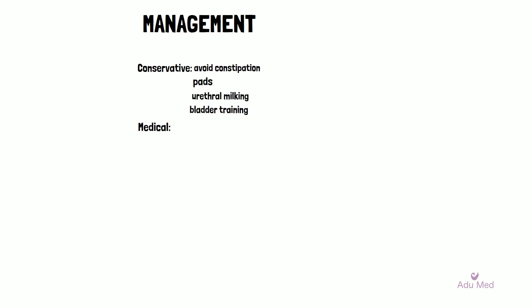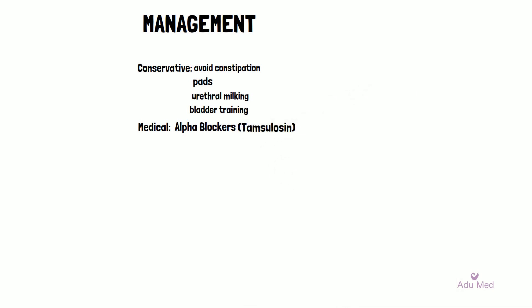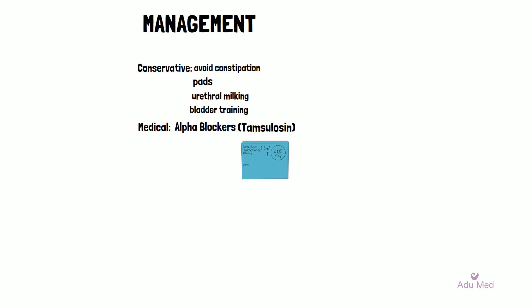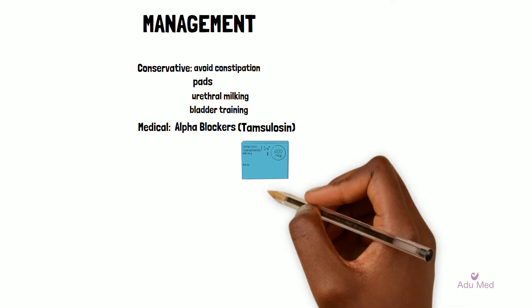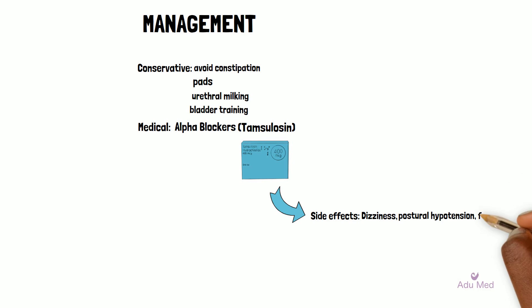Now we can look at medical management. Starting with BPH as the cause of symptoms, first-line treatment includes alpha blockers such as tamsulosin, which should be offered to men with moderate to severe voiding symptoms if conservative measures are not appropriate. These medications work by relaxing the smooth muscle of the prostate. Common side effects include dizziness, postural hypotension and fatigue.